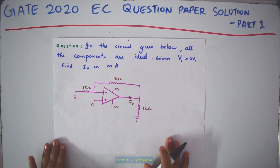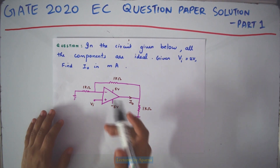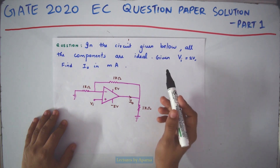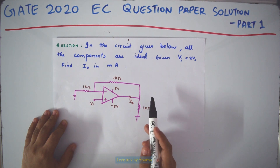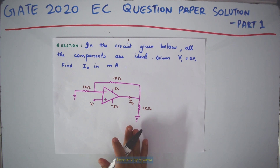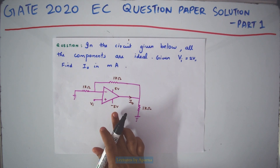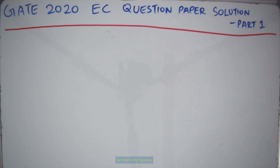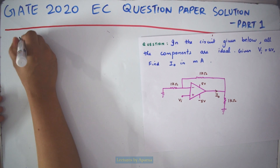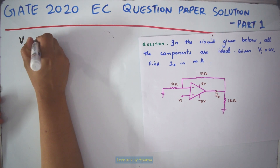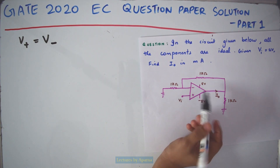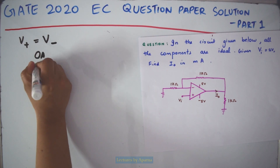This is a question from the OPAMP section. In the circuit given below, all the components are ideal. Given VI is 2 volts, find I0 in milliamperes. The OPAMP is ideal, so two conditions apply: the voltage at the non-inverting terminal is equal to the voltage at the inverting terminal, and the current flowing into the OPAMP is 0 amperes.